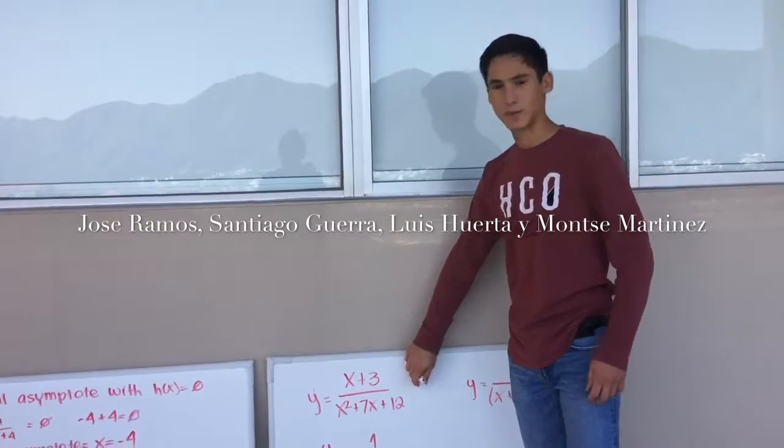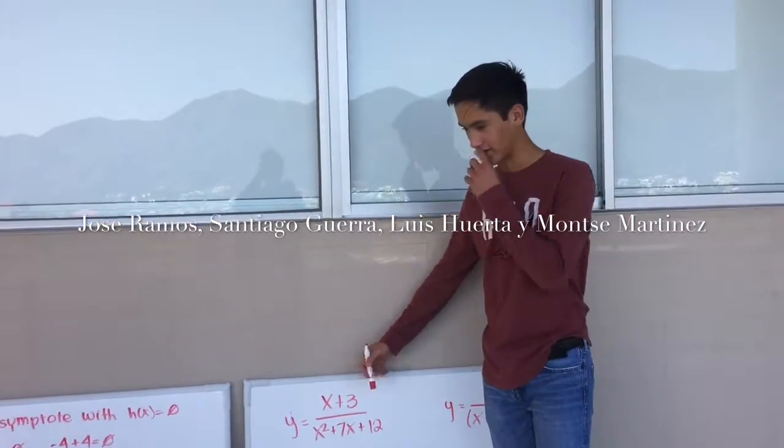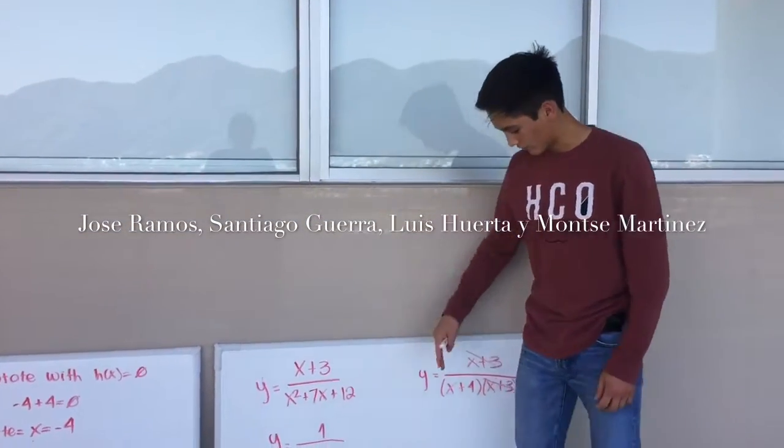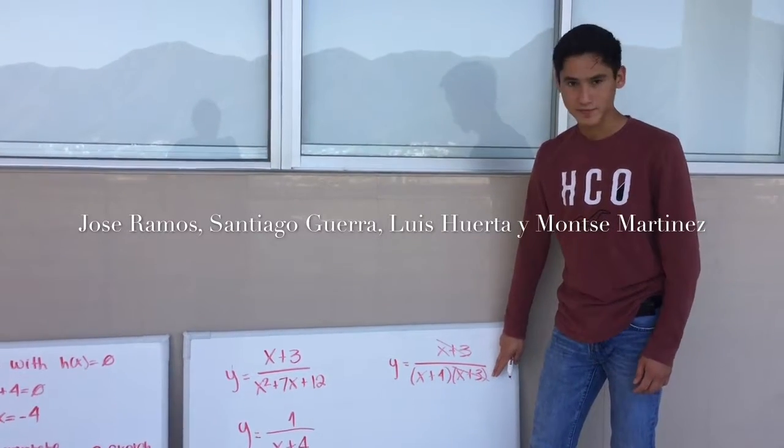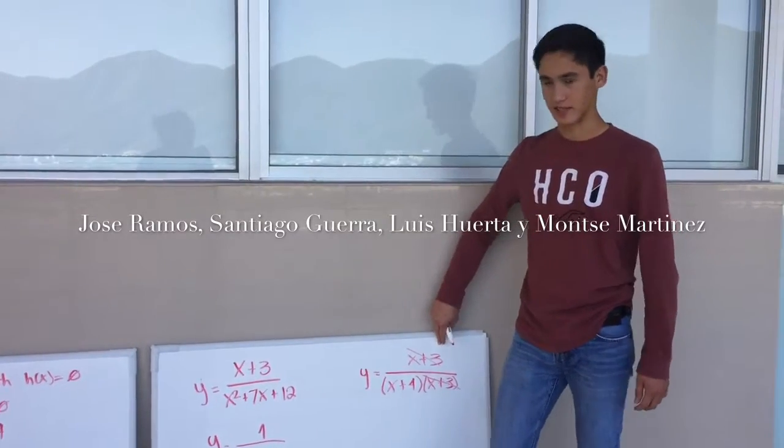We first got this type of equation that is a factorized equation. The denominator we have to factorize it, so we have x plus 4 and x plus 3. And the numerator you can pass it like the same.